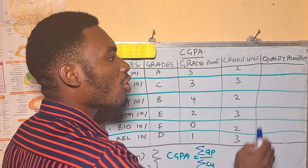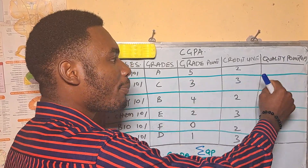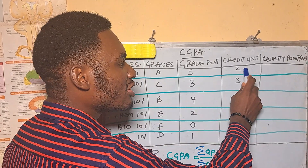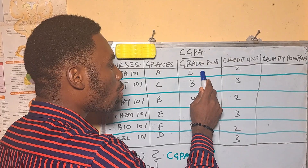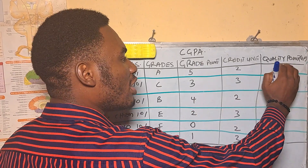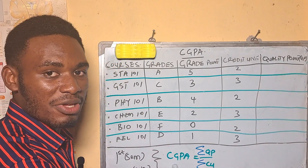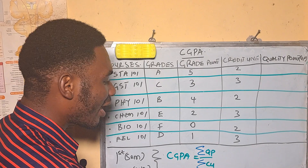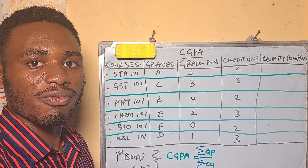The last column is called the Quality Point (QP). You get the quality points by multiplying your credit units by your grade points. We need the quality points because the formula for CGPA is the summation of quality points divided by the summation of your total credit units for that particular semester.